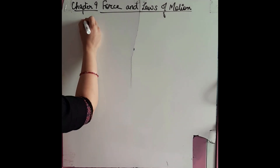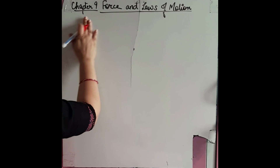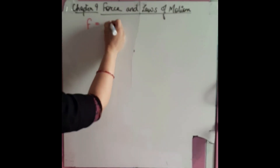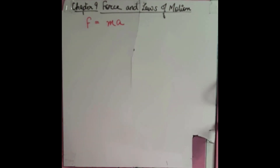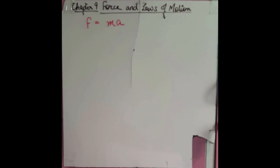We obtained the mathematical expression for Newton's second law as F is equal to Ma — the unbalanced force is equal to the product of mass and acceleration. This we have discussed.